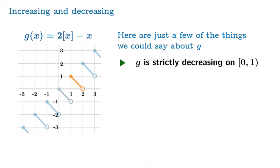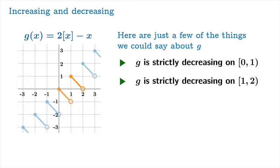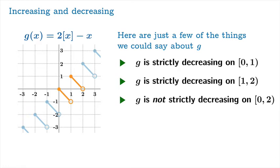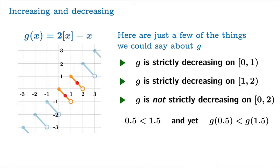You could also isolate the interval from 1 to 2, and g is strictly decreasing on that interval. But if you took the union and looked at the interval from 0 to 2, you can no longer say g is strictly decreasing, because you can find arguments within this interval for which the function value goes up. To be precise, 0.5 is less than 1.5, and yet g of 0.5 is less than g of 1.5, which violates the condition of being strictly decreasing. So we're not allowed to assert this — it's just not true.